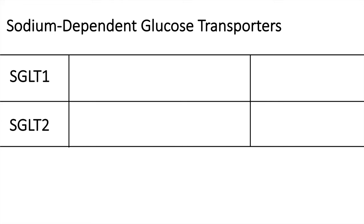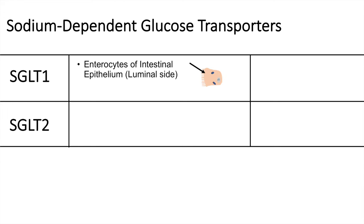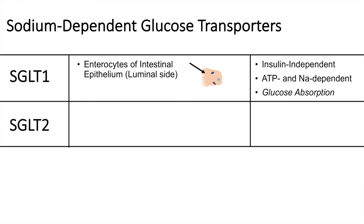SGLT1 is also found in enterocytes of the intestinal epithelium on the luminal side, facing the lumen of the small intestine. These are insulin independent and ATP and sodium dependent. They are important for glucose absorption — typically, glucose is first taken up into the enterocytes through SGLT1, making it the first transporter that glucose comes into contact with.